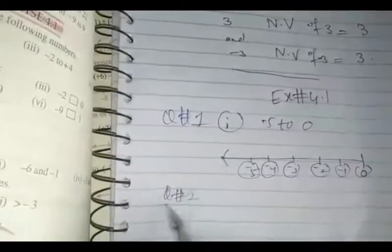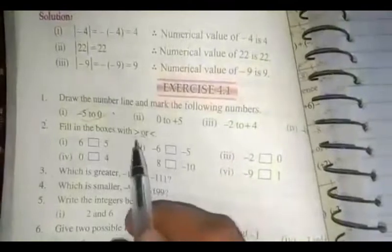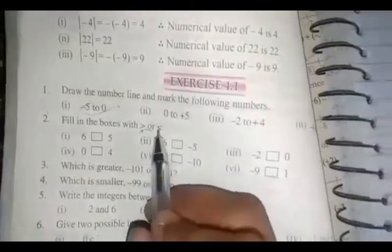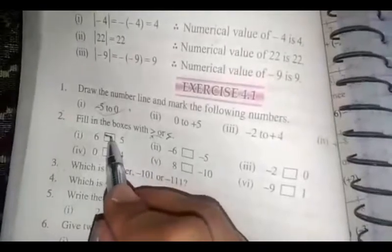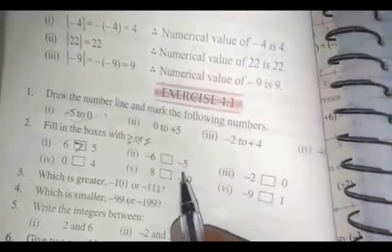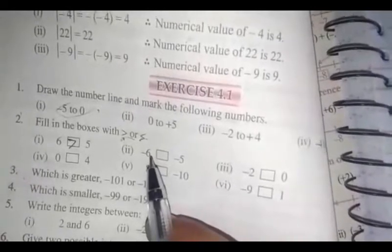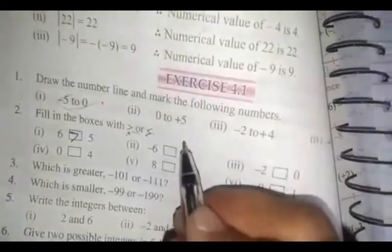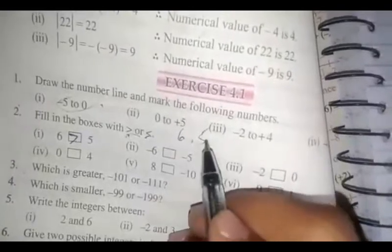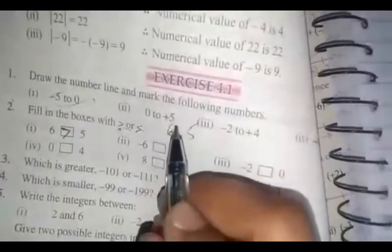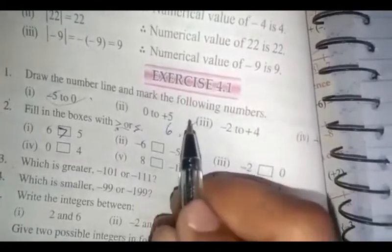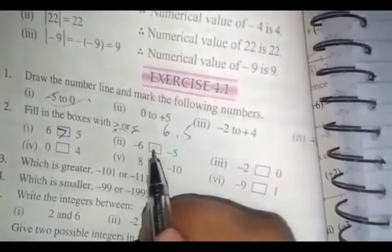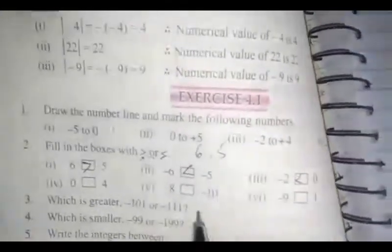Question number 2: fill the boxes with greater than or less than. This sign is for greater than and this is for less than. For example, 6 is greater than 5. Now consider minus 5 and minus 6 — numbers with a negative sign. If the numerical value of a number is larger, by using the negative sign, the number with the larger numerical value becomes smaller and the number with the smaller numerical value becomes larger. So, minus 6 is less than minus 5, and minus 2 is less than 0. Similarly, you have to fill all the boxes.